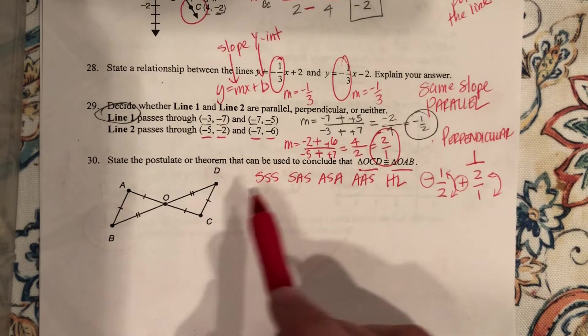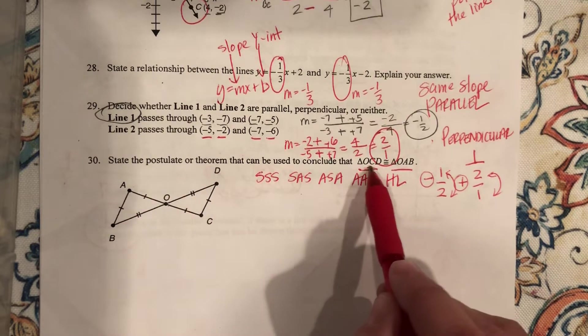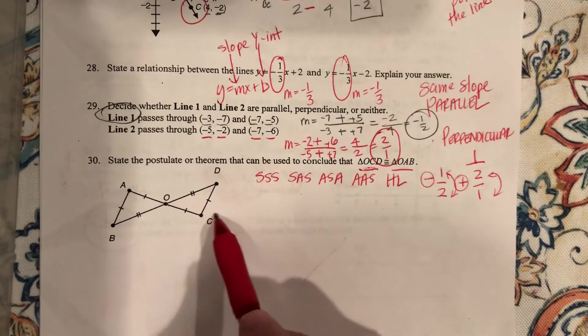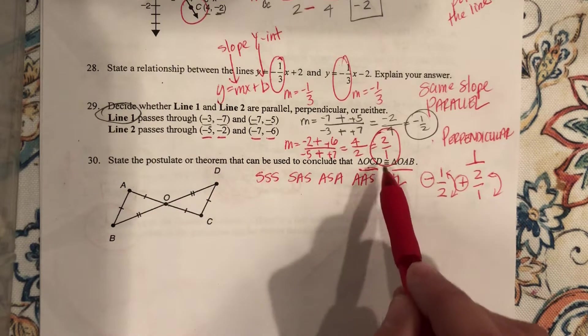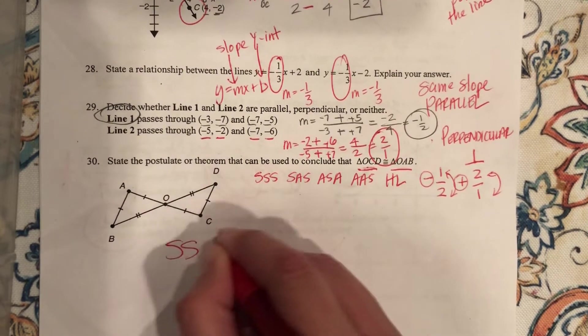So if I look at these two triangles, OC is congruent to OA, right? CD is congruent to AB. And OD is congruent to OB, and they're all sides, so the answer to this one is side, side, side.